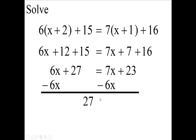Bring down the 27, bring down the equals, 7x minus 6x is 1x, or x, that's 1x, plus the 23.